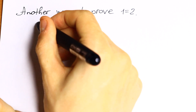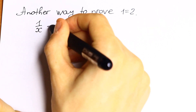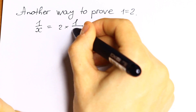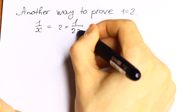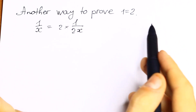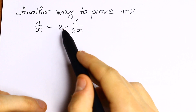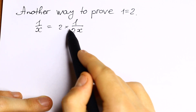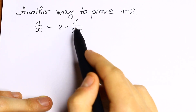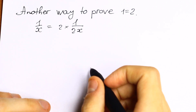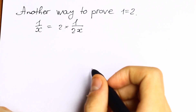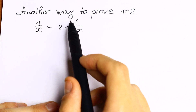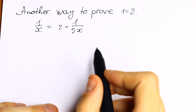We will have, for example, 1 over x equal to 2 times 1 over 2x. So this is a correct equation, a correct expression. We'll cancel these two and we'll have 1 over x equal to 1 over x. And this works for all x different from 0, of course.